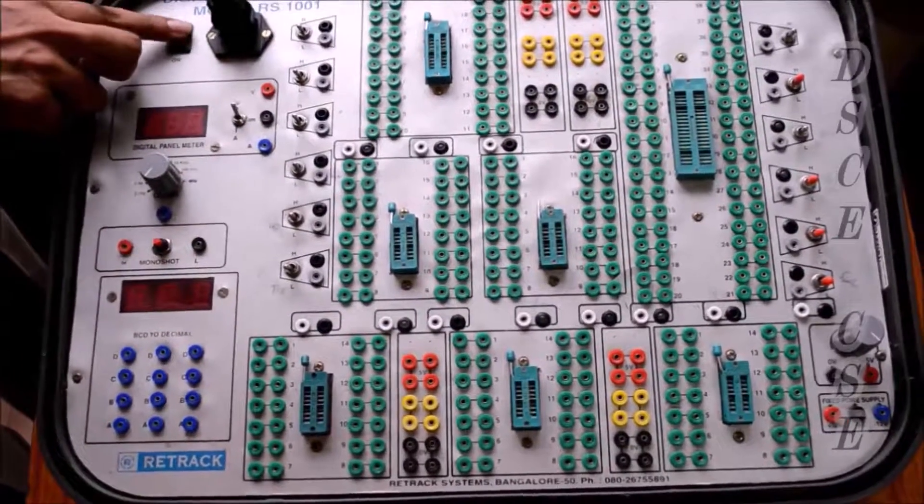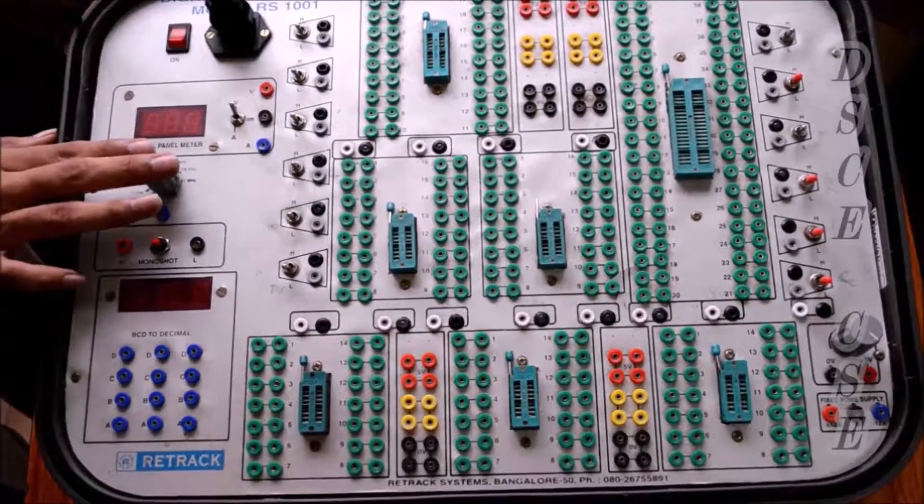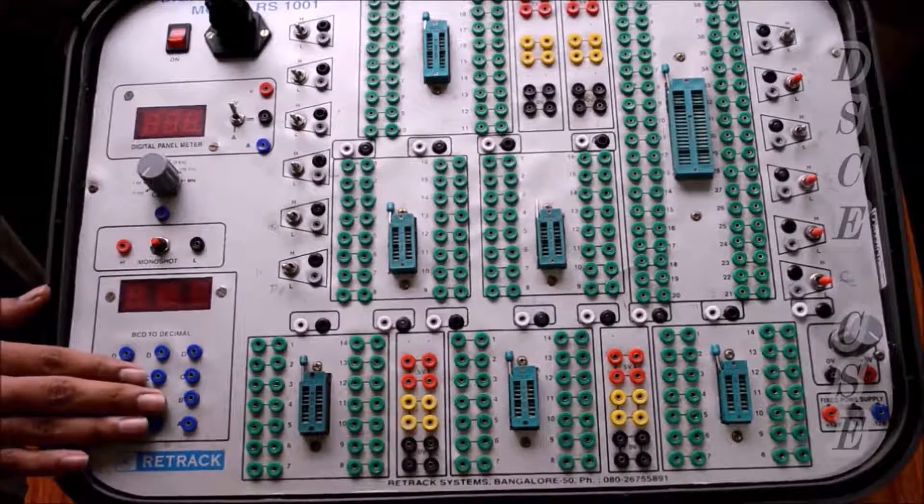This is the power cord and this is the switch to turn it on and off. This is the automatic clock, this is the mono shot, this is BCD to decimal converter.